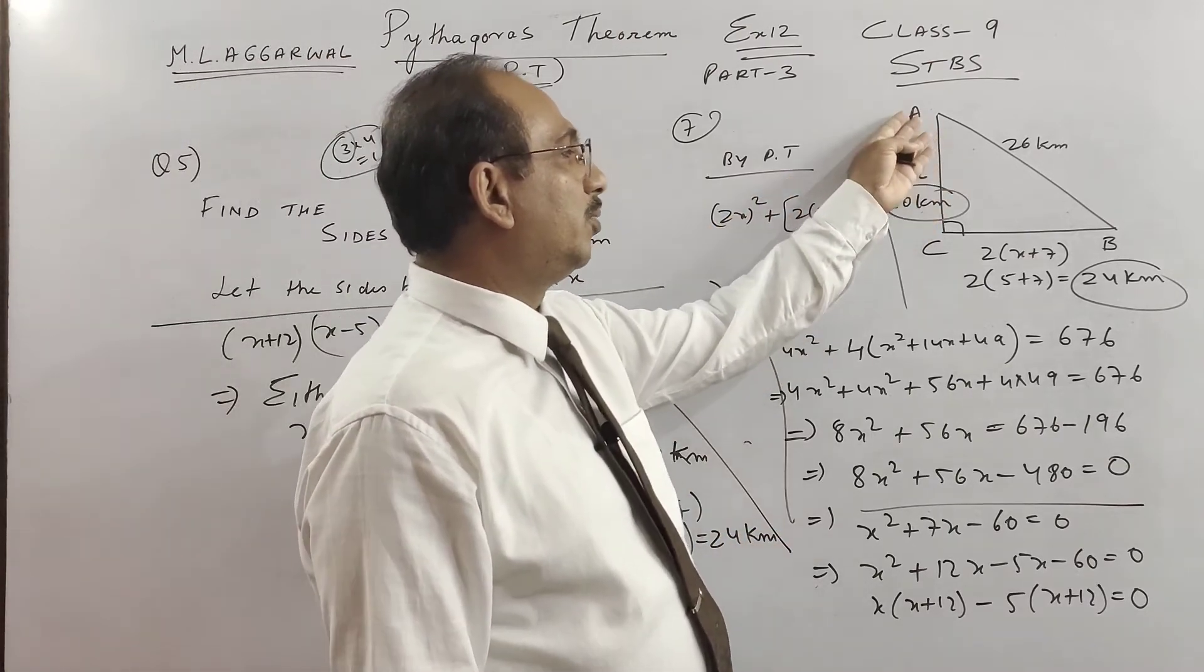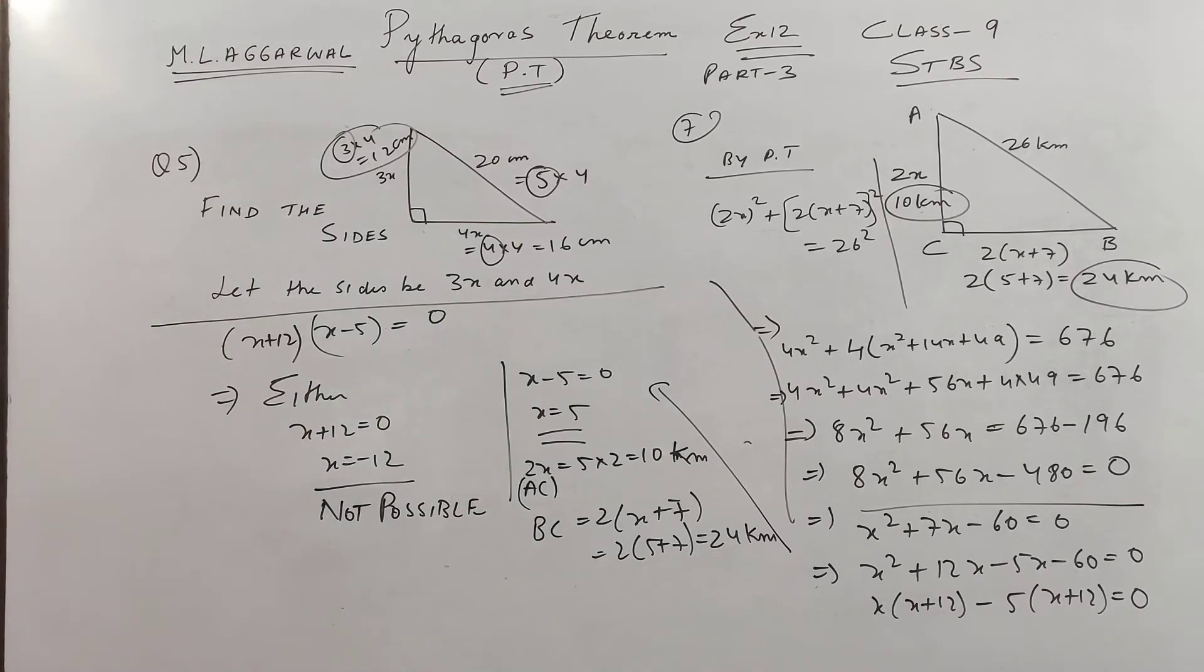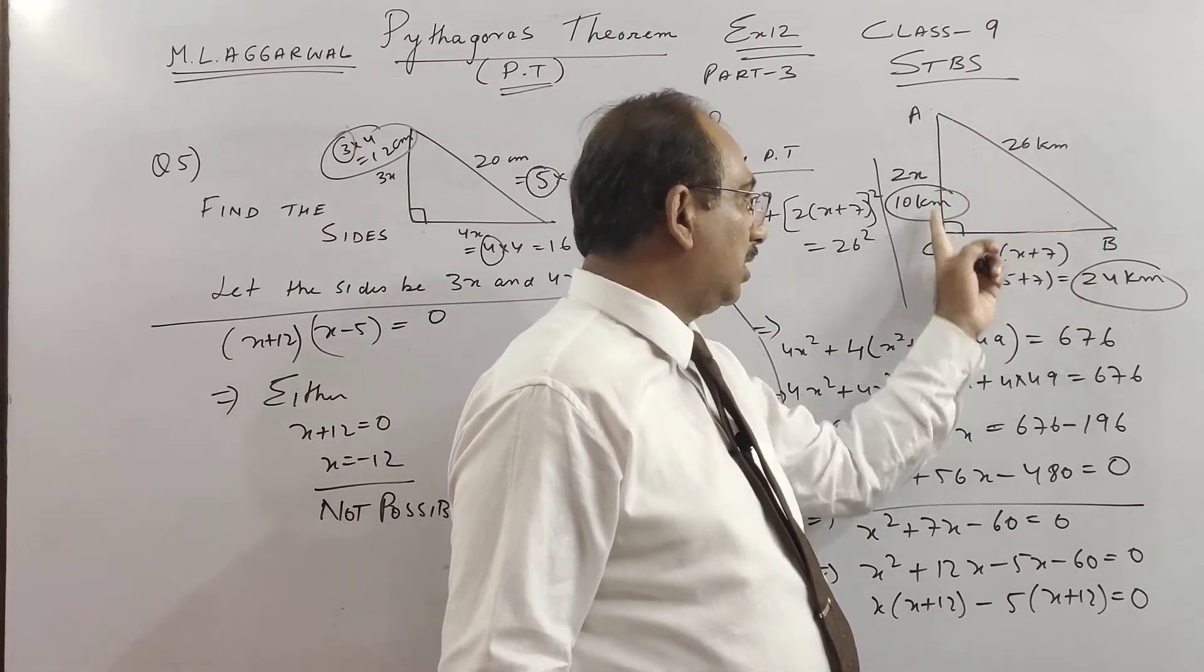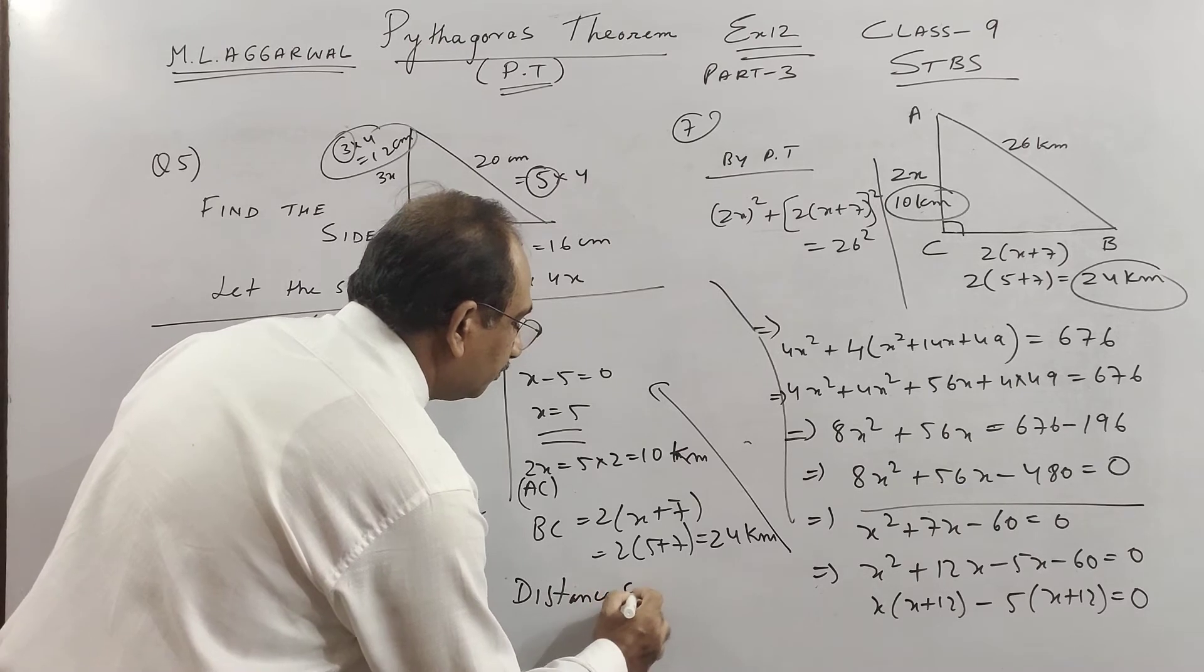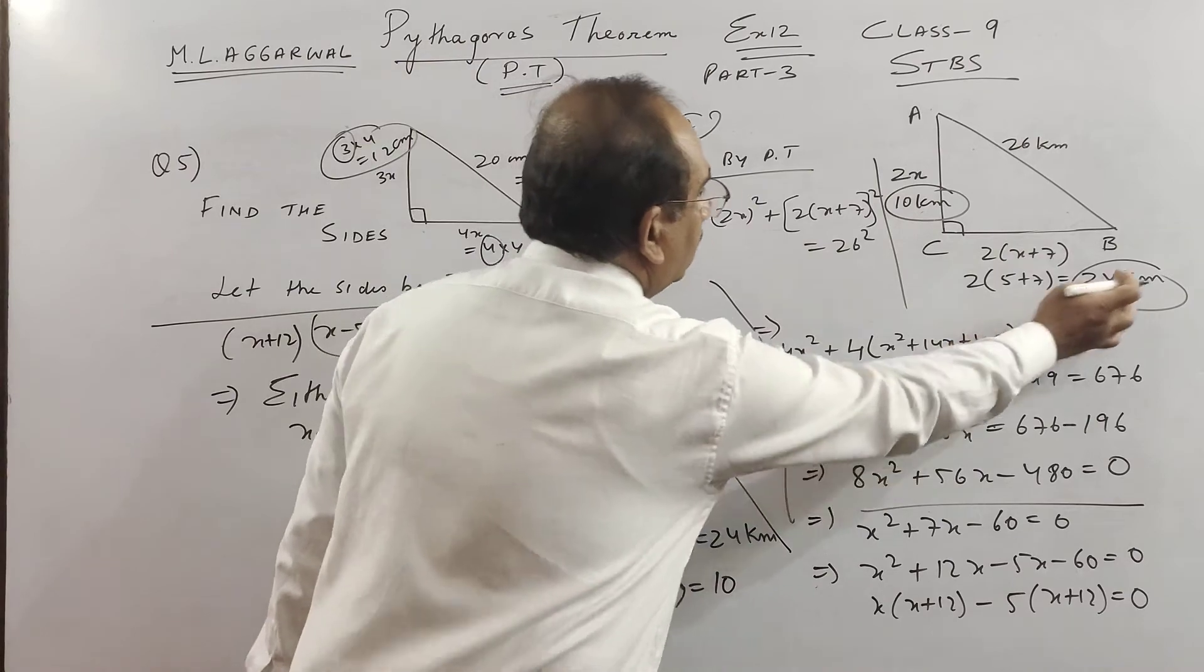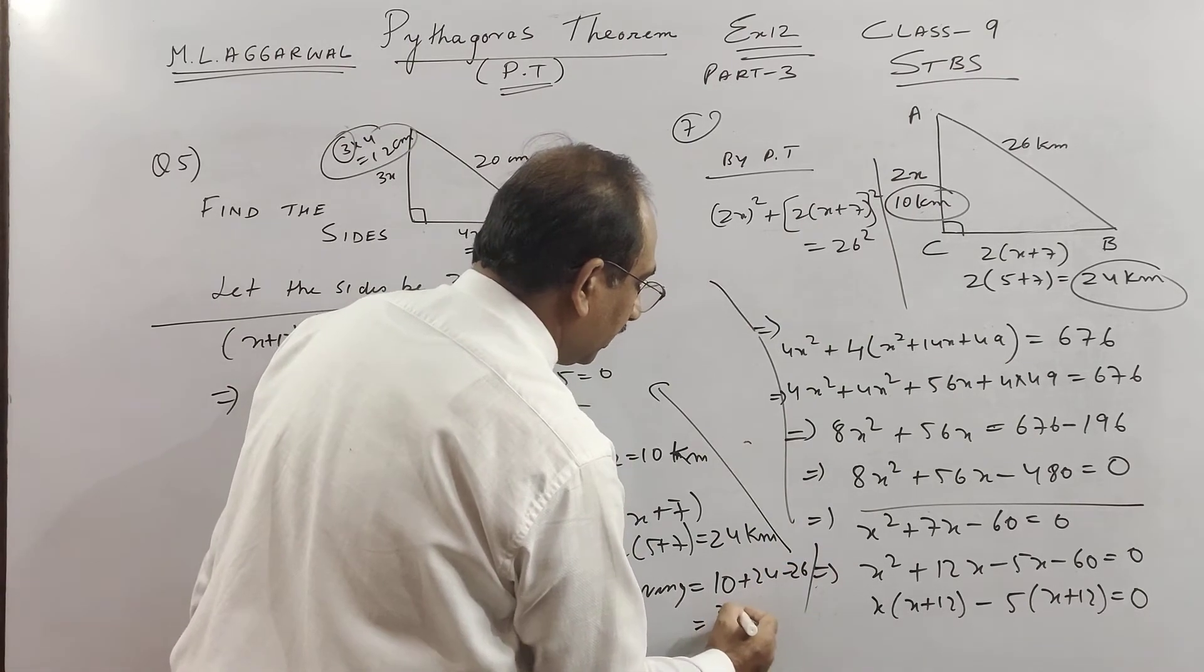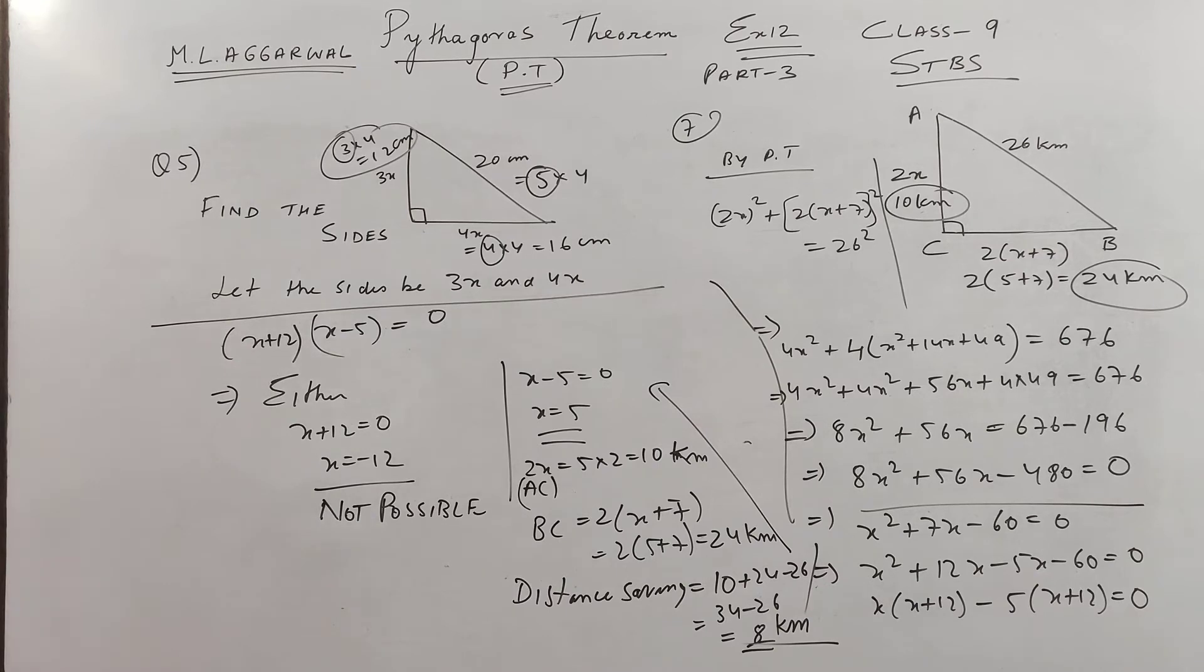So this was a long way children, so other side this was our AC children and we have BC as 2x plus 7, to 5 plus 7 is equal to 24 kilometer. So we were previously people were going 10 kilometer, 24. So once this road is made distance is shortened. So distance saved if you see is 10 plus 24 minus 26. So we get 34 minus 26 as 8 kilometer they save. So kindly pause the video and copy.